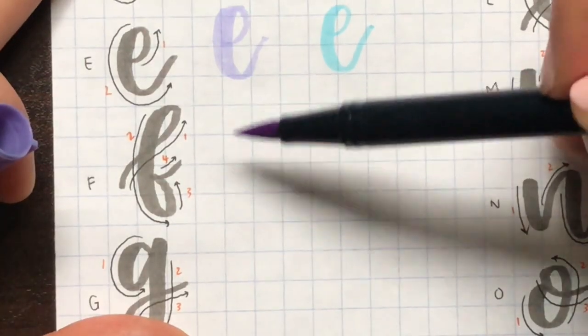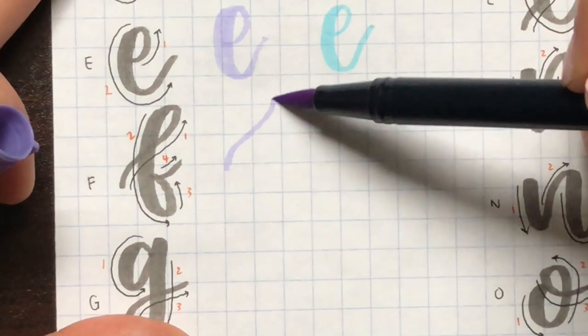Maybe I should have mentioned this before, but on the left side where I've already written out the letter in gray, you can see I also wrote out the stroke order.